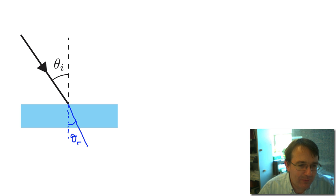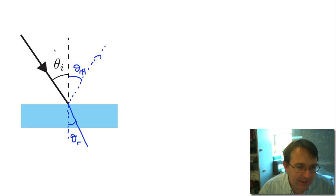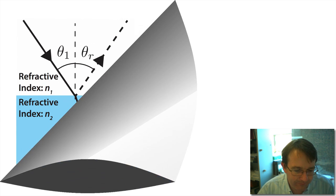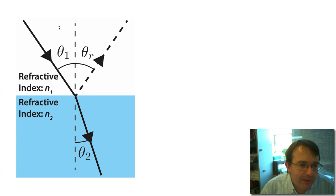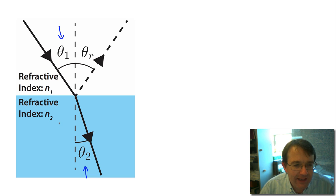It's also worth pointing out that typically when a ray of light hits the surface of a material it's not entirely refracted — there is also going to be a component that is reflected. There is an angle of reflection, and of course the angle of reflection is equal to the angle of incidence. To understand the relationship between the angle of refraction and the angle of incidence, let's tidy up this diagram. Theta one is the angle of incidence and theta two is the angle of refraction.